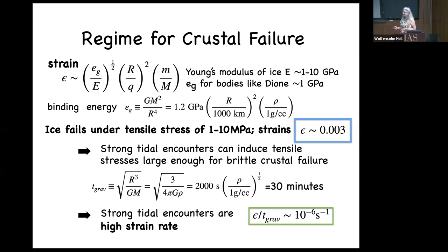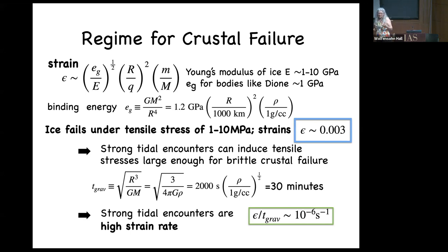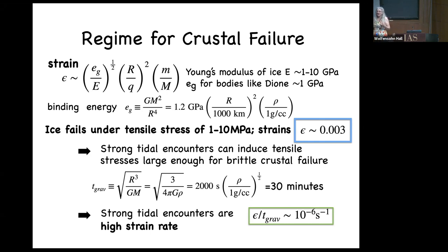How long does it take the encounter to take place? You can estimate a gravitational timescale — like an hour — and that gives you a strain rate. This is a high strain rate compared to what people think of in geology, which is about six orders of magnitude lower. So that gives you a feeling for whether, if I'm trying to get insight from reading geophysics books, any of it applies. I have no idea. This is a challenge: how do you predict high strain rate phenomena on planetary scales?